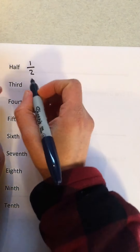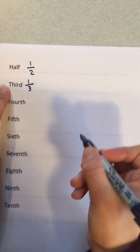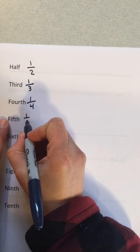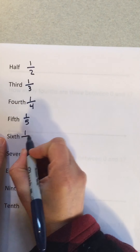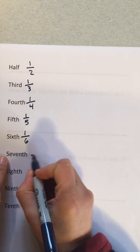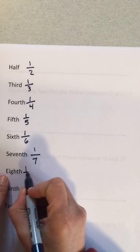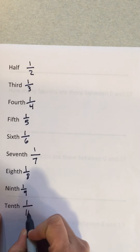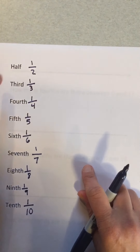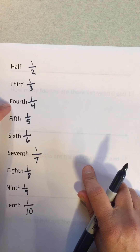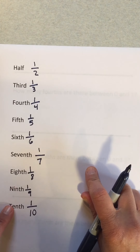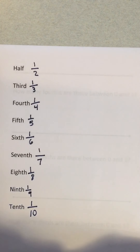Half is one out of two. Third is one over three. Fourth is one over four. Fifth is one over five. Sixth is one over six. Seventh is one over seven. Eighth is one over eight. Ninth is one over nine. And tenth is one over ten.